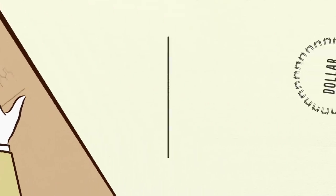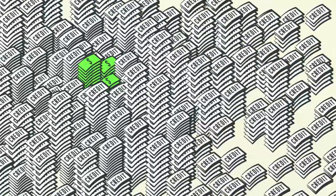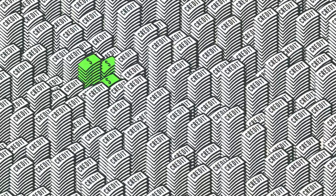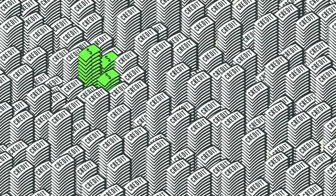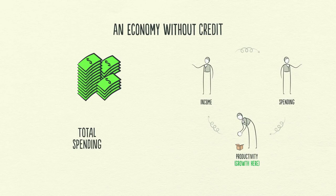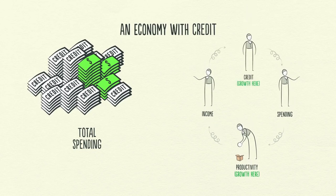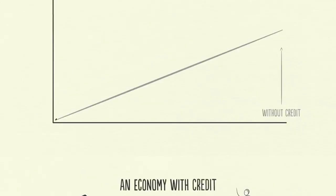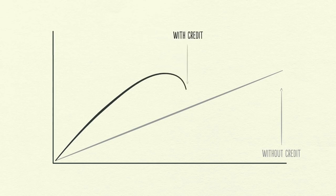The reality is that most of what people call money is actually credit. The total amount of credit in the United States is about $50 trillion, and the total amount of money is only about $3 trillion. In an economy with credit, you can also increase your spending by borrowing, so an economy with credit allows incomes to rise faster than productivity over the short run, but not over the long run.